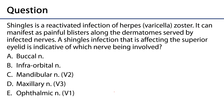Assessment question: Shingles is a reactivated infection of varicella zoster that can manifest as painful blisters along the dermatomes served by infected nerves. A shingles infection affecting the superior eyelid is indicative of which nerve being involved? Options include buccal nerve (a V3 branch), inferior alveolar nerve, maxillary division V2, or ophthalmic nerve V1. The correct answer is the ophthalmic nerve V1, as it serves the orbit and periorbital vicinity. Thank you very much for your time.